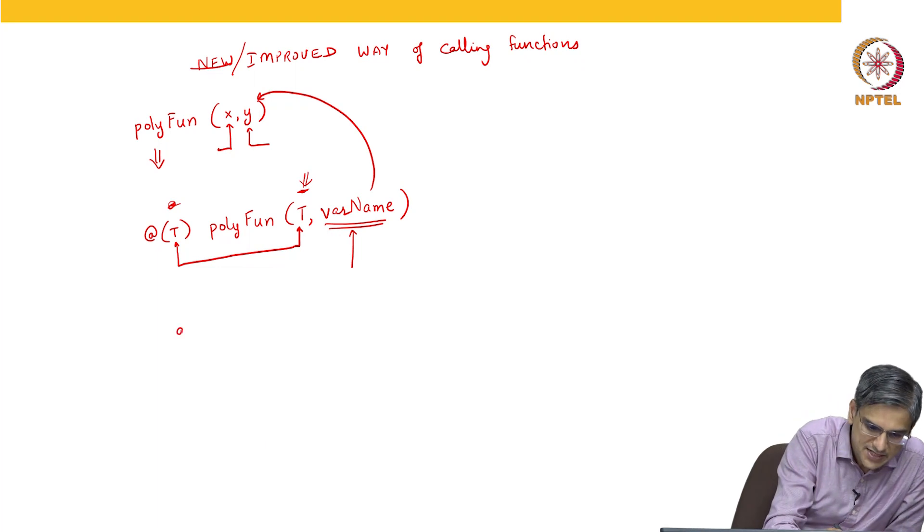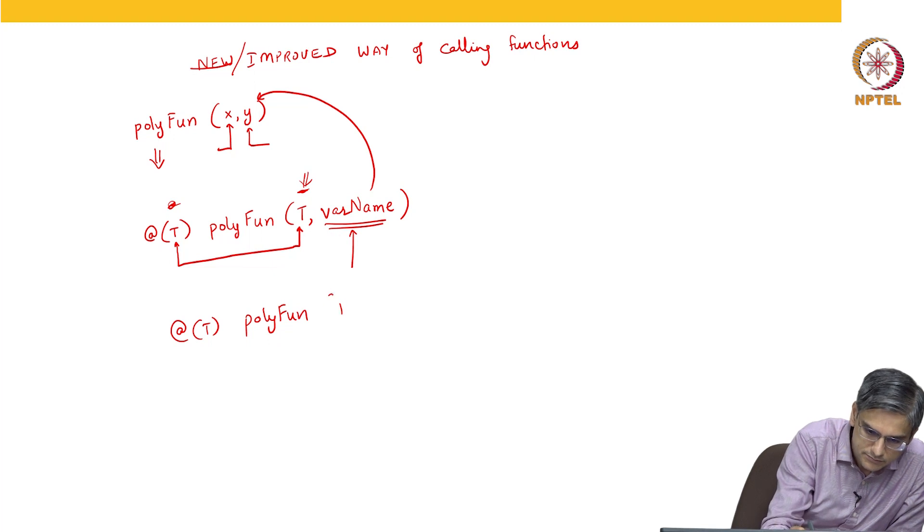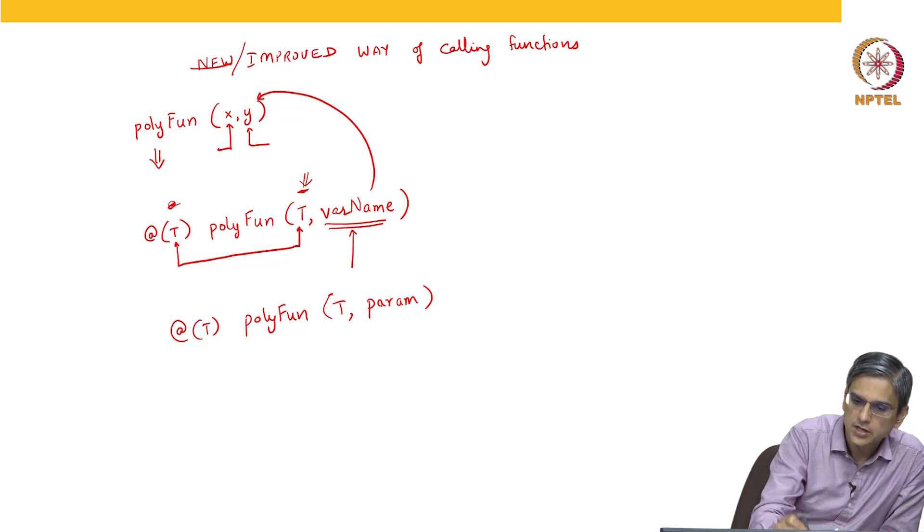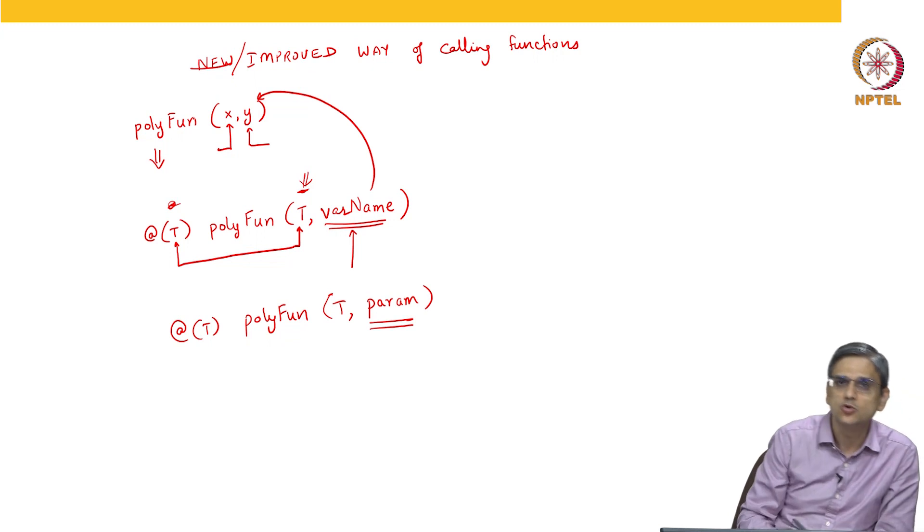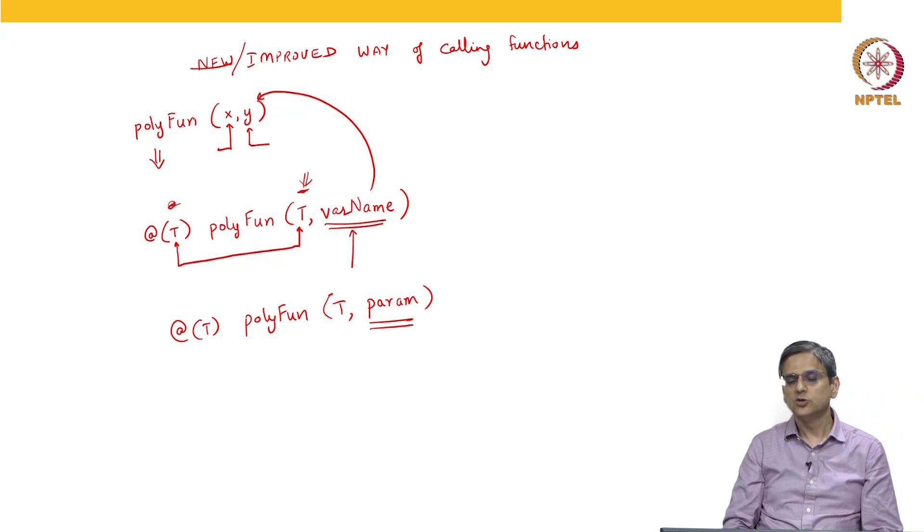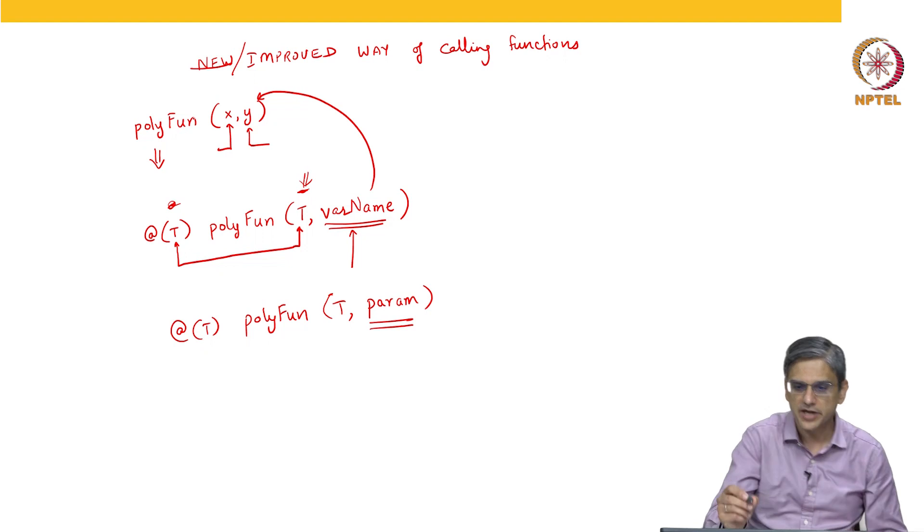When we said at T, this structure param was passed on into the function polyfun. So, this is kind of how this works.